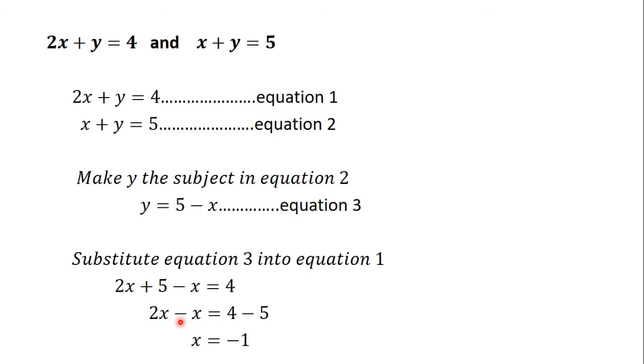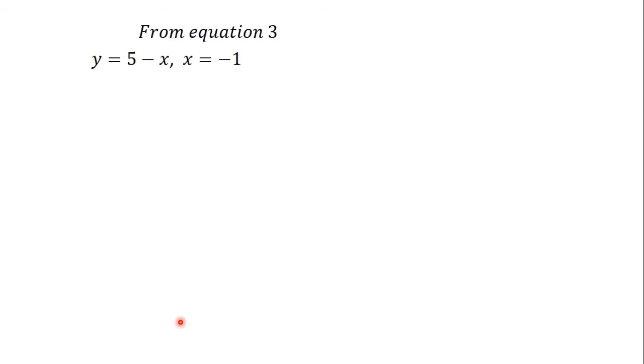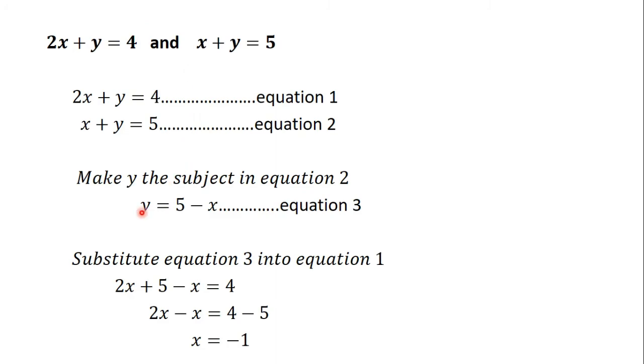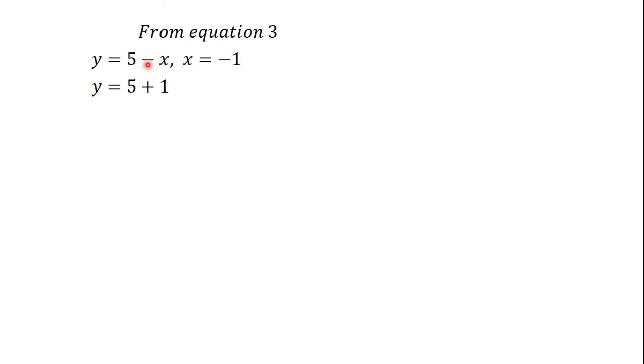The other part is to solve for y. We formed equation 3 where y is the subject, so we substitute x into it. From equation 3, y is equal to 5 minus x. But we have now found x to be minus 1. So wherever we see x, we replace it with minus 1. So y is equal to 5 minus minus 1, and that gives us 5 plus 1, which equals 6. So using the substitution method, x is equal to minus 1 and y is equal to 6. You can try using the elimination method and see if you get the same answer.